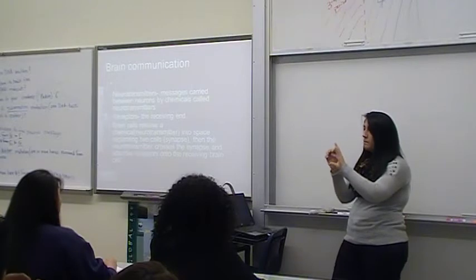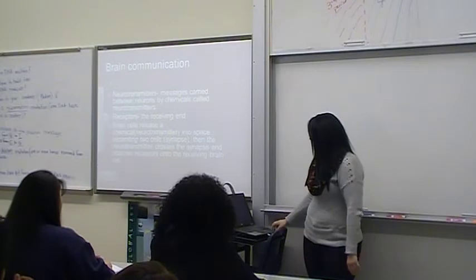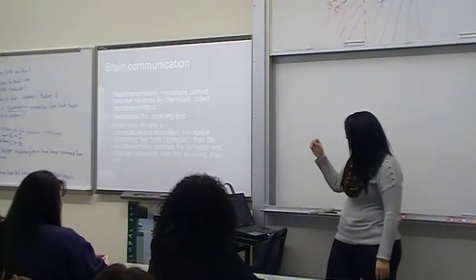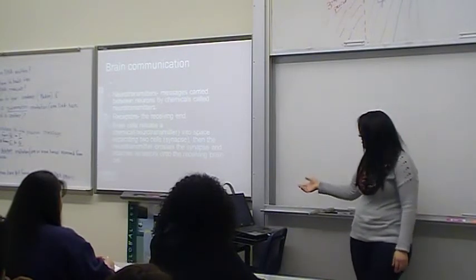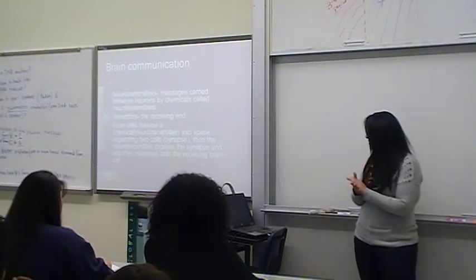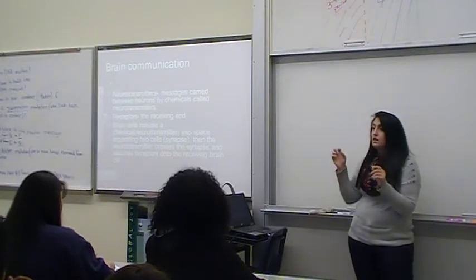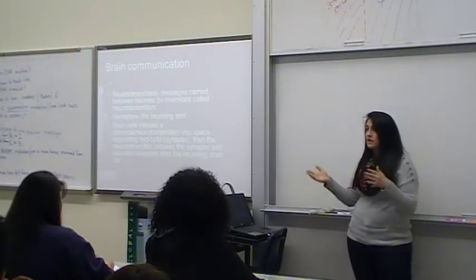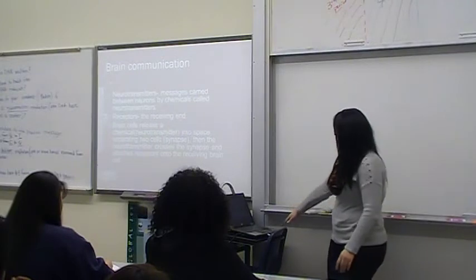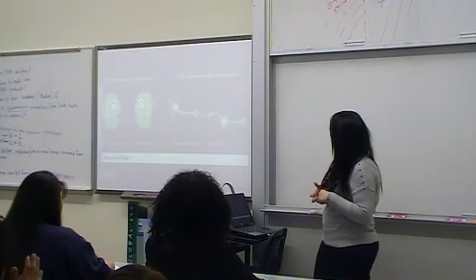Through the space between them, it comes to the receptors. The brain cells release a chemical, which is the neurotransmitter, into this space, which is called a synapse. Then the neurotransmitter crosses the synapse and attaches to receptors. That's how they communicate. And this happens millions and millions of times.